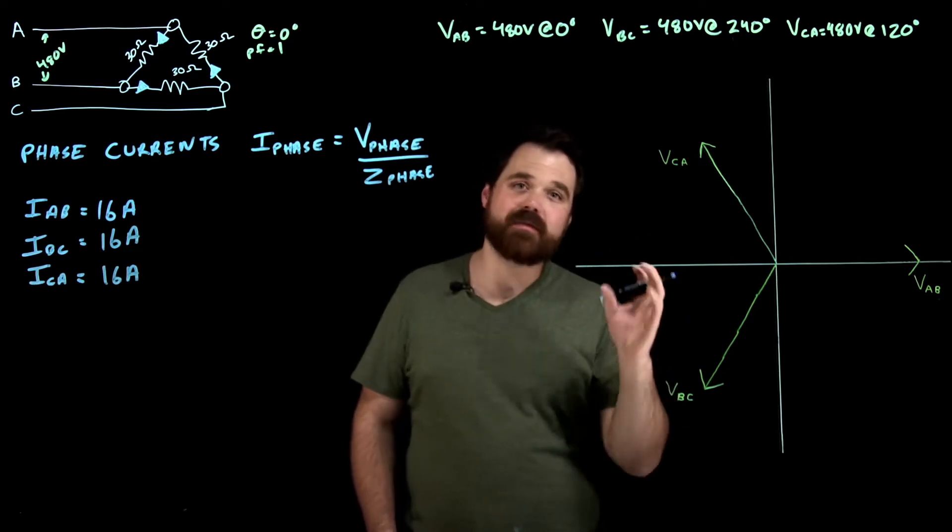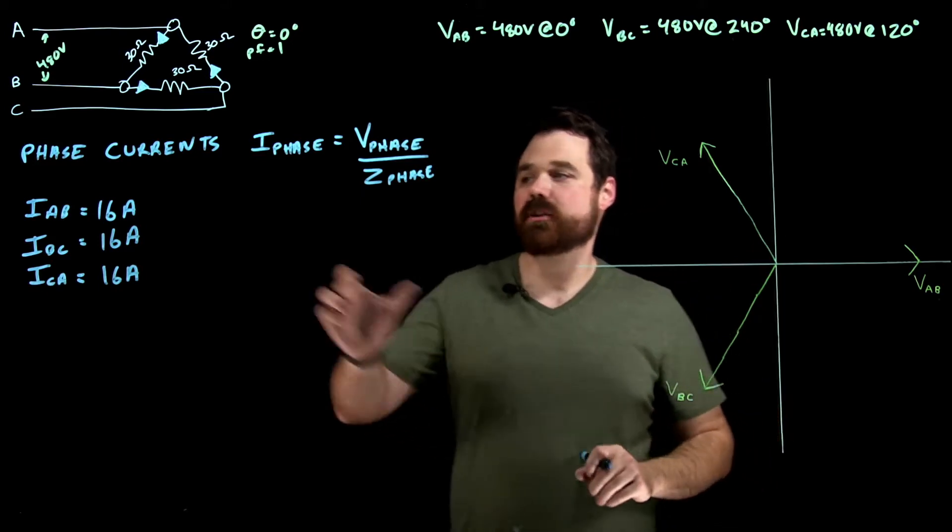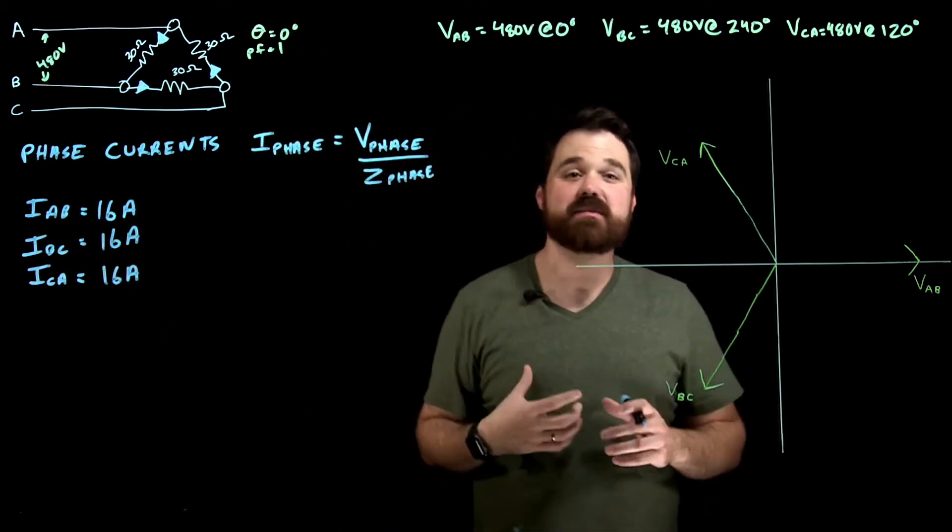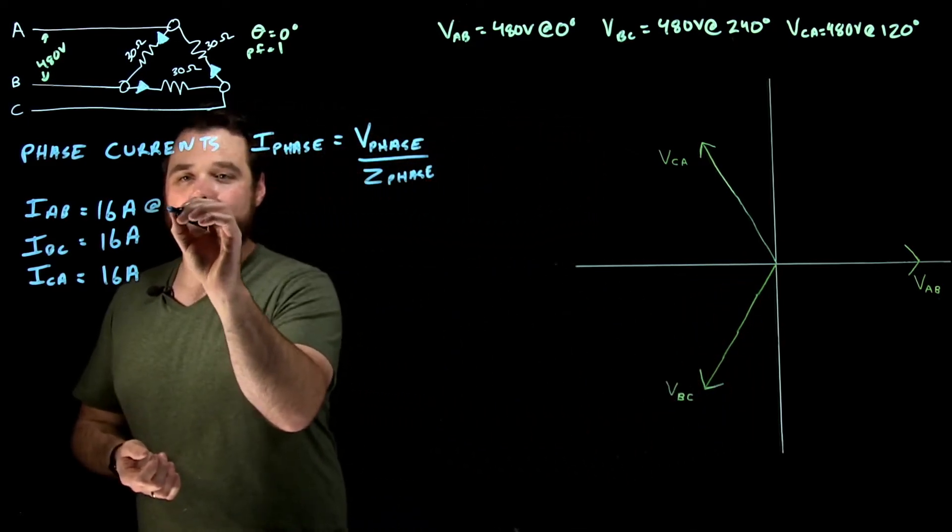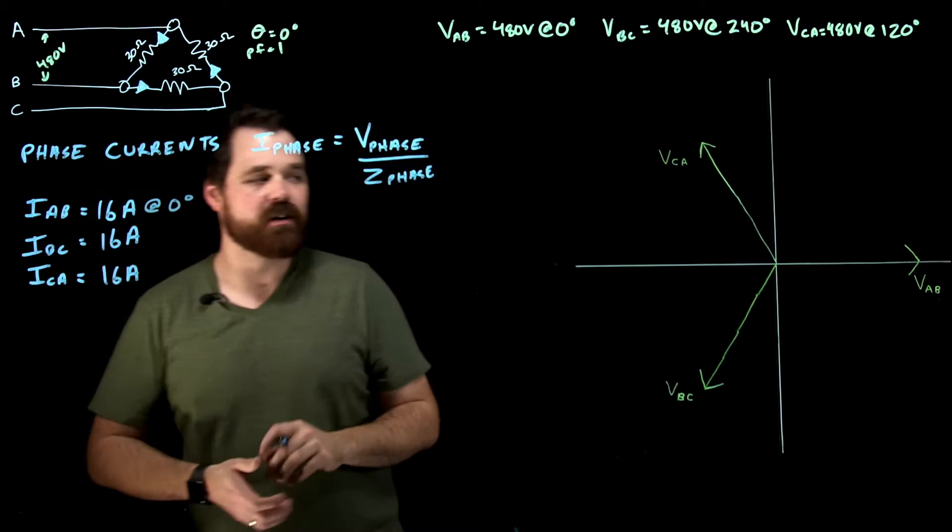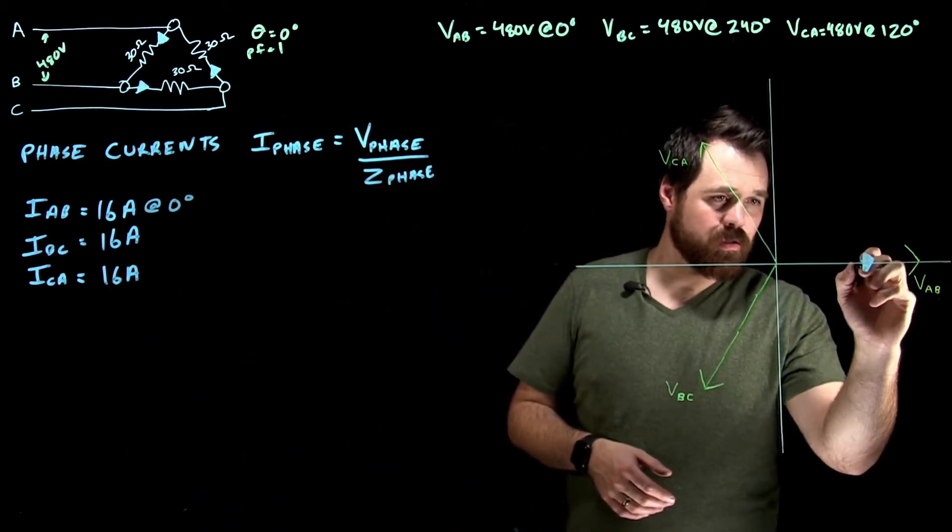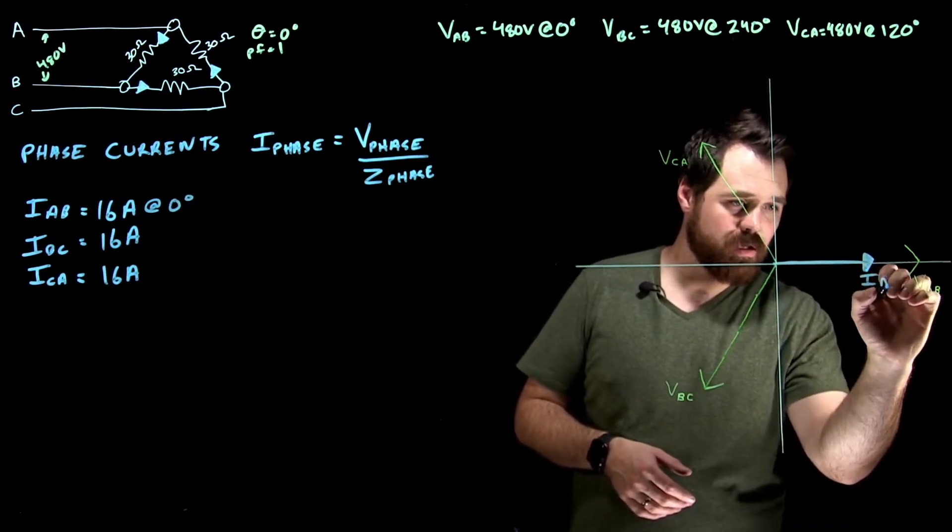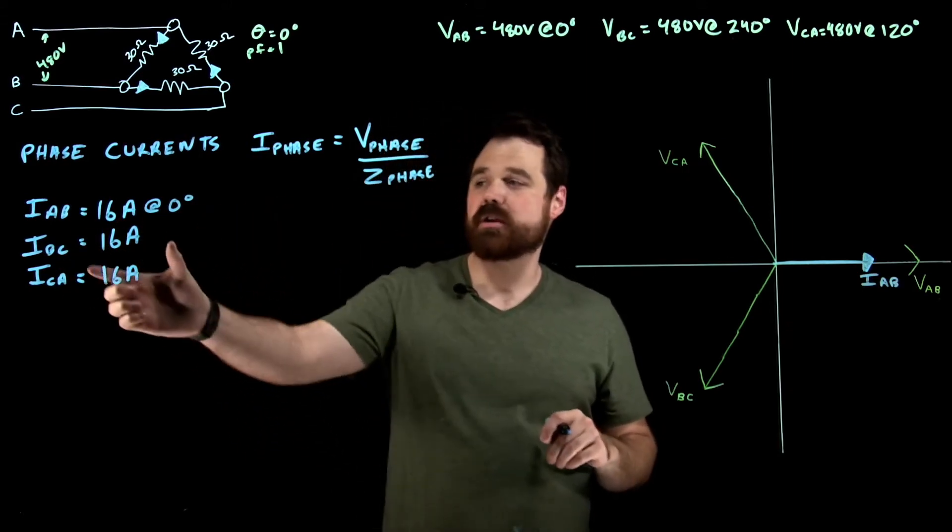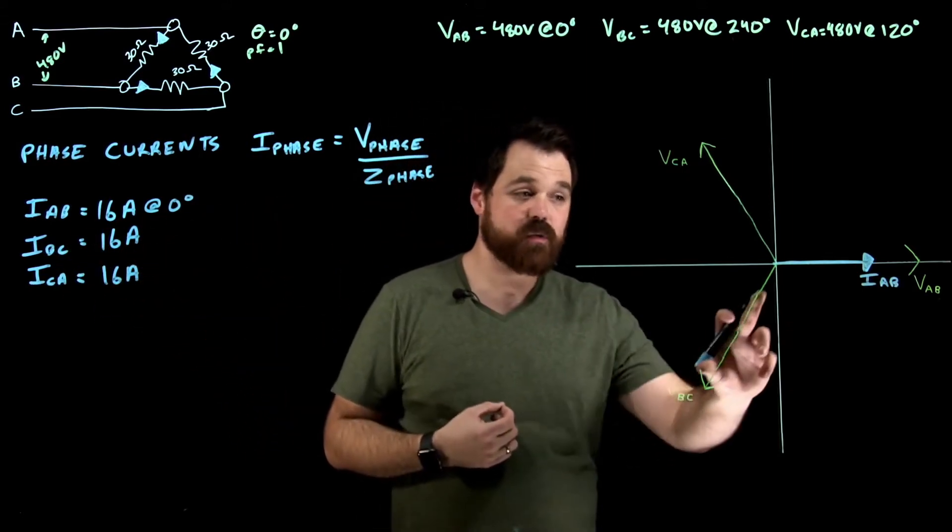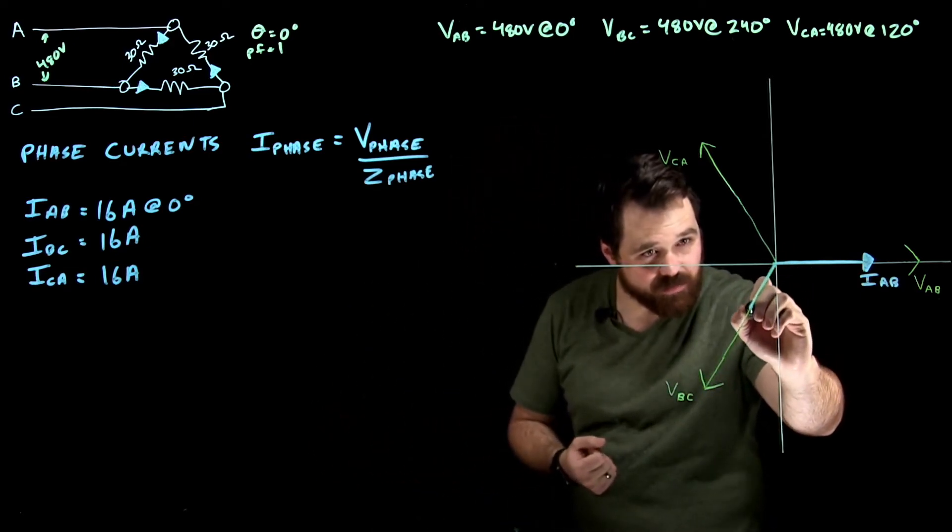Now the thing I want to take care of is my angles. Because I used VA to B in order to get I A to B, and they are in phase with each other where the phase angle is zero, that means that my current is going to be at zero degrees just with my voltage. The voltage I used to determine my B phase current was this voltage here, they're in phase, so that means my current is going to be right here.